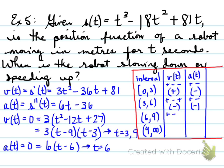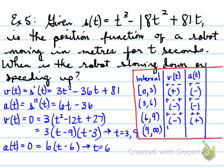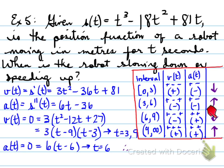Checking interval 6 to 9: pick t equals 7. The velocity evaluates to negative and the acceleration is positive — velocity times acceleration is negative, meaning slowing down. Checking interval 9 to infinity: pick t equals 10. All values are positive — velocity is positive and acceleration is positive — velocity times acceleration is positive, meaning speeding up.